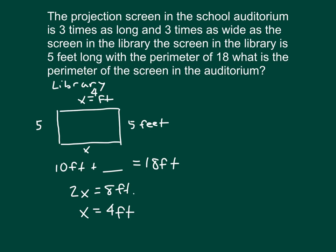We can then use this information — because this is a two-step problem — to figure out the projection screen in the school auditorium. It says that it's three times as long and three times as wide as that screen in the library. Three times.